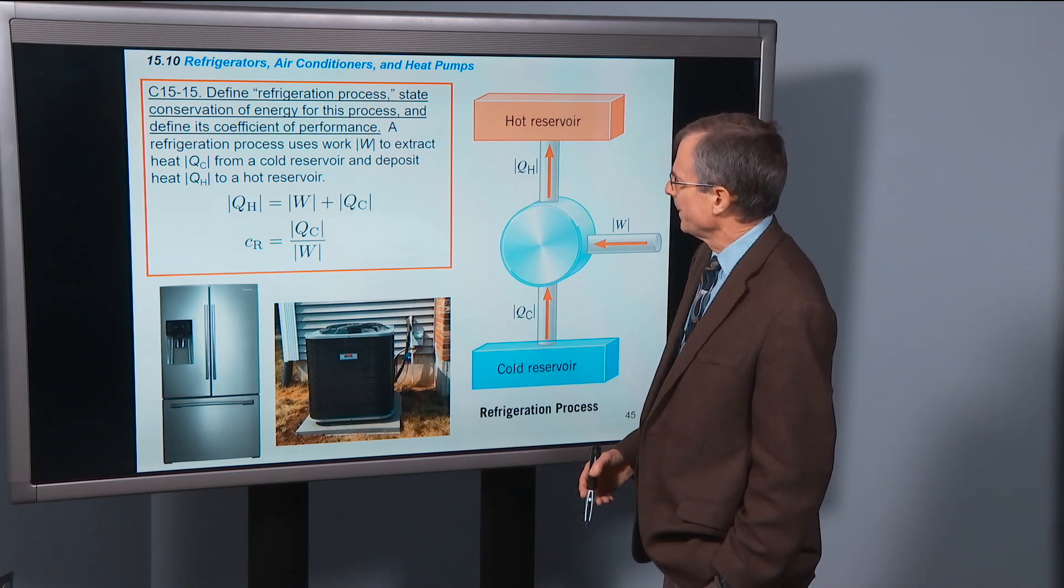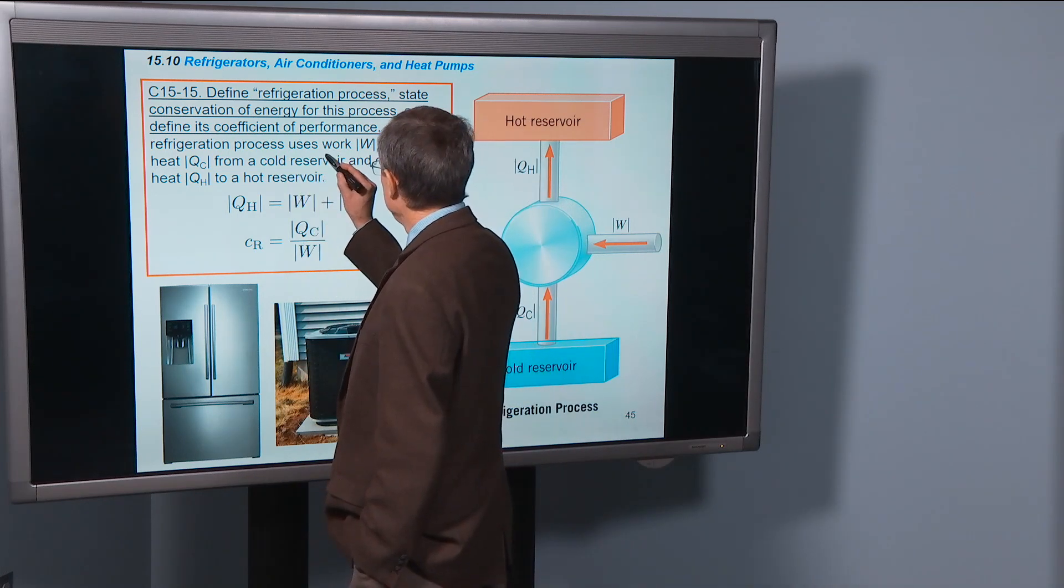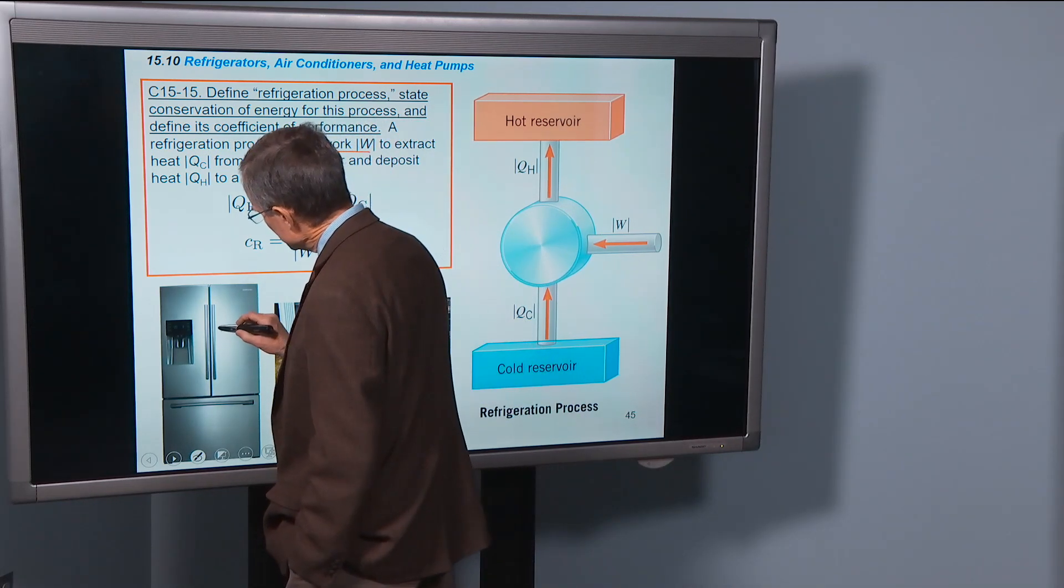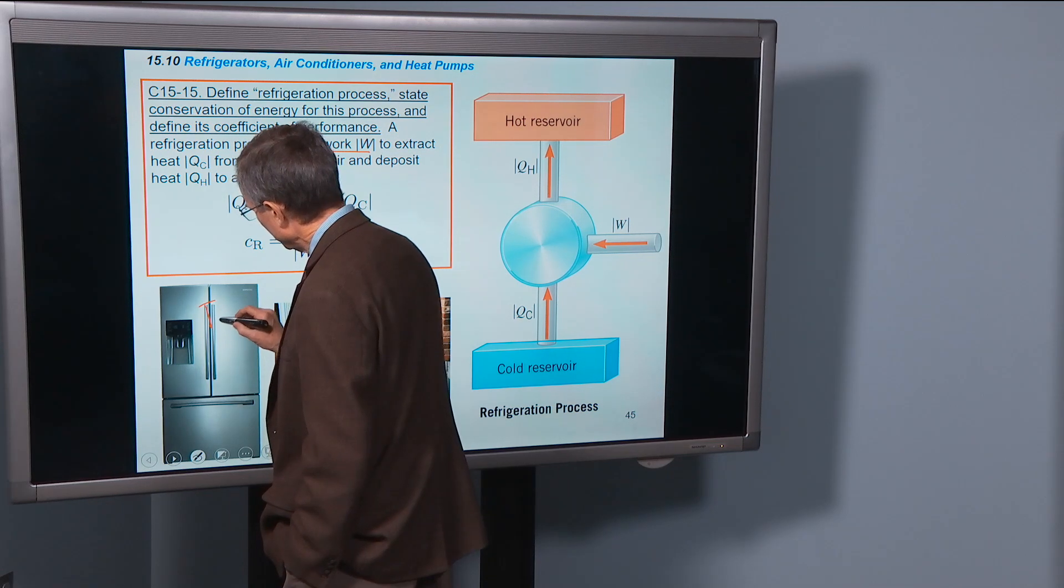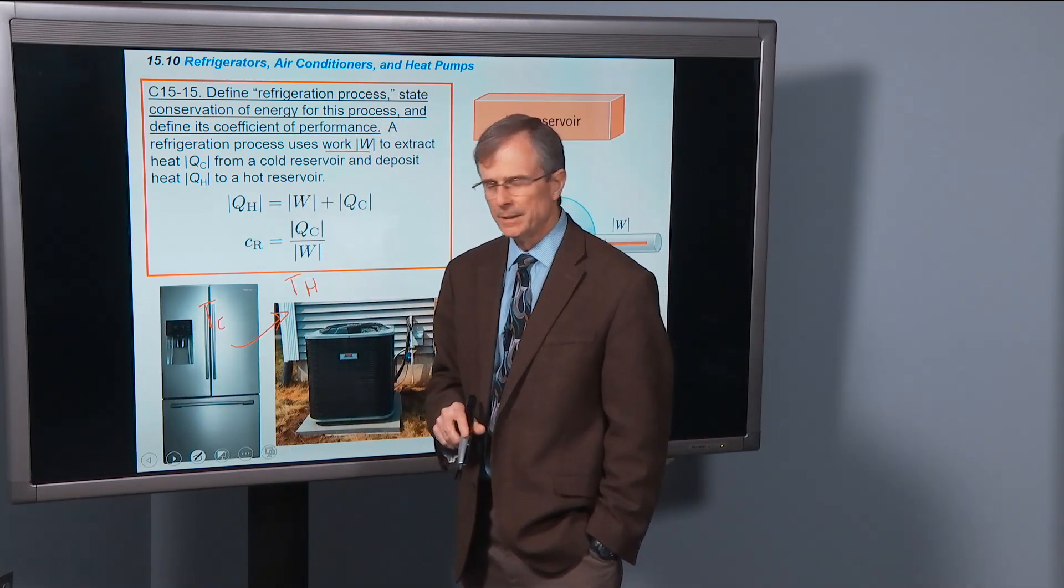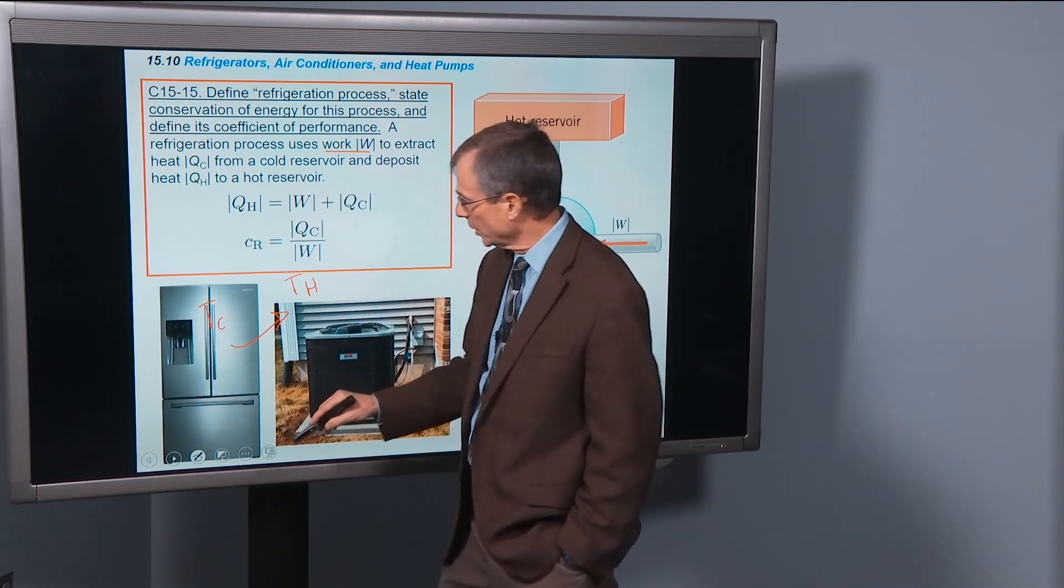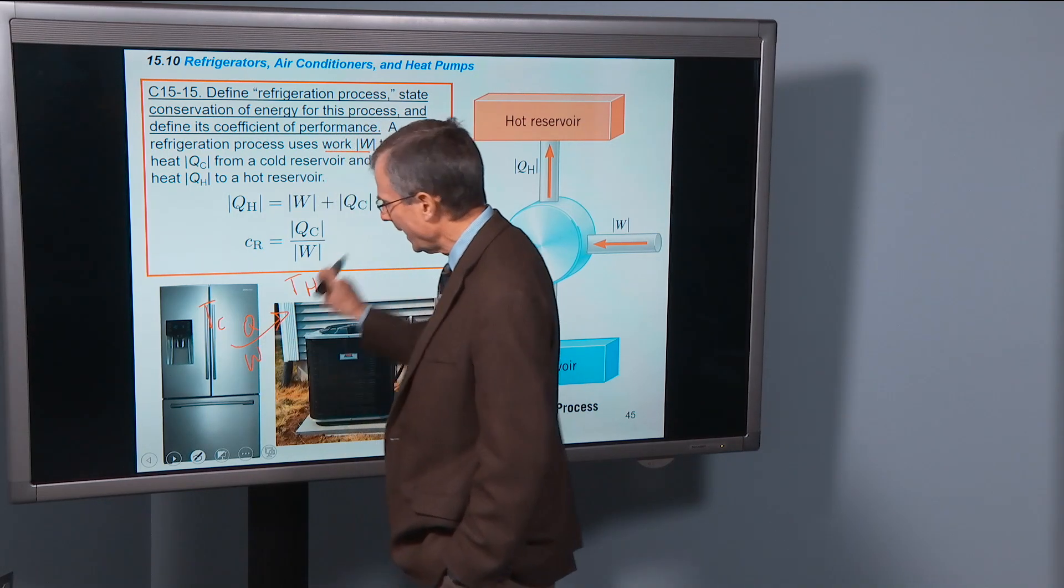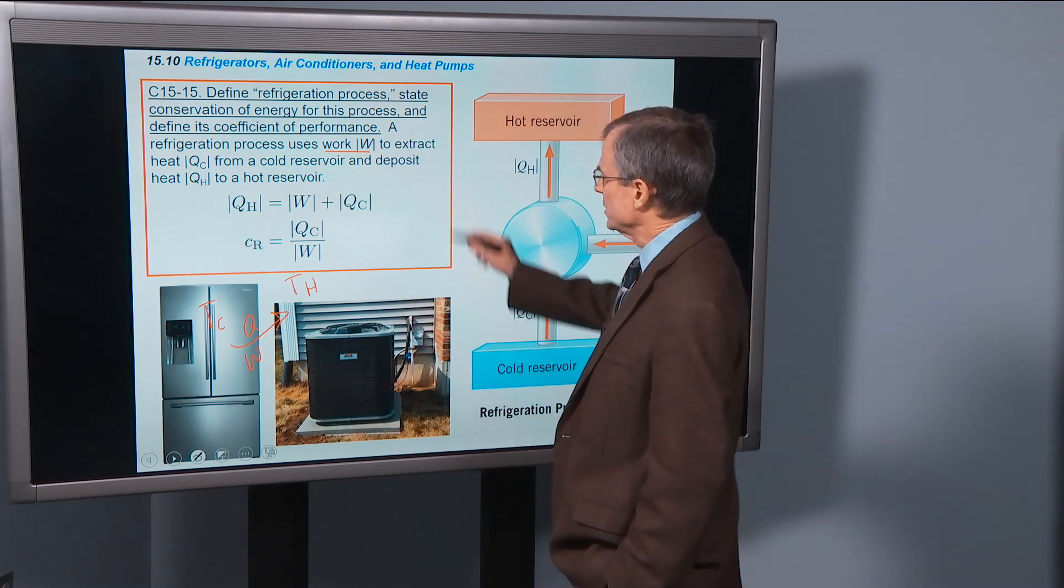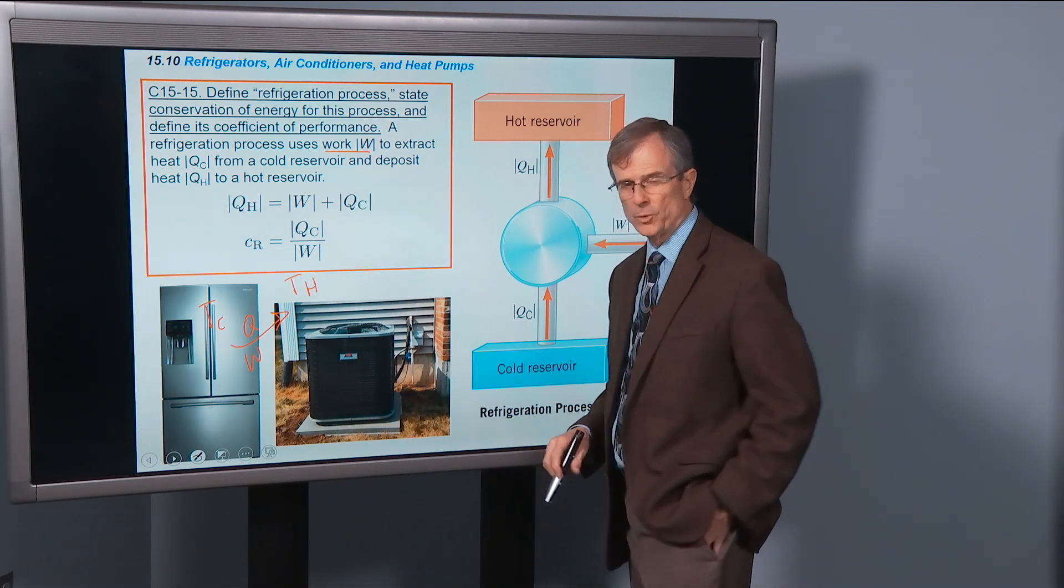So here's the definition. A refrigeration process, like we talked about before, uses work to extract heat from a cold reservoir. So here we're at a cold temperature, here's the hot temperature outside the fridge. We're trying to drive that heat in the direction it doesn't want to go. Heat wants to go from hot to cold. We're going to do work to drive this heat out of that cold refrigerator and put it into the room. So it's extracting heat from a cold reservoir and depositing the heat to a hot reservoir, which is in this case the room.